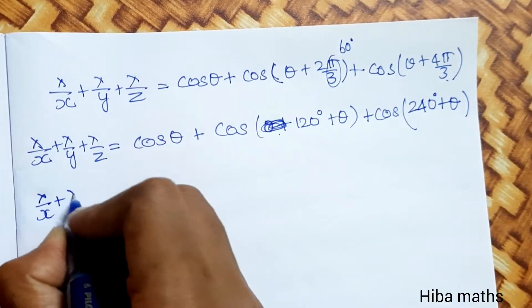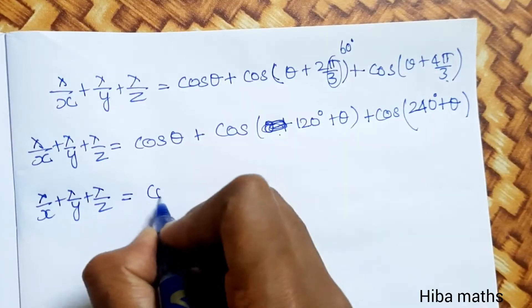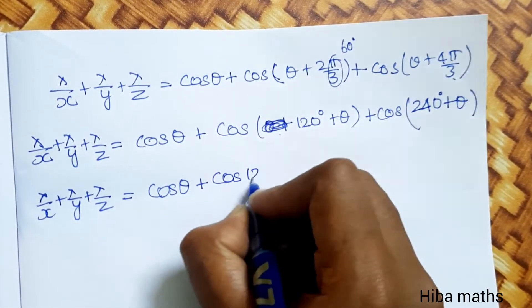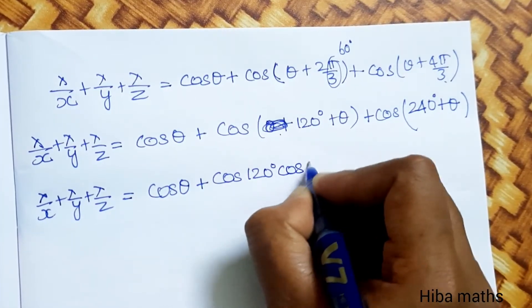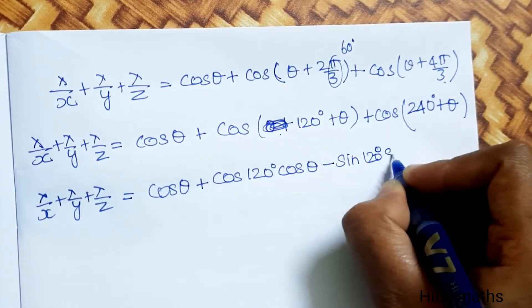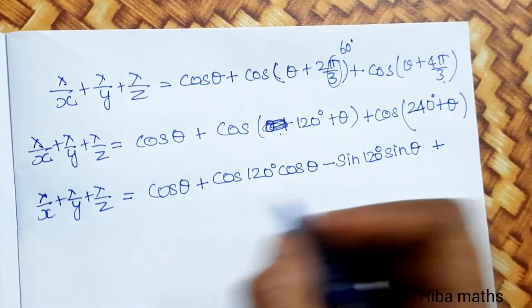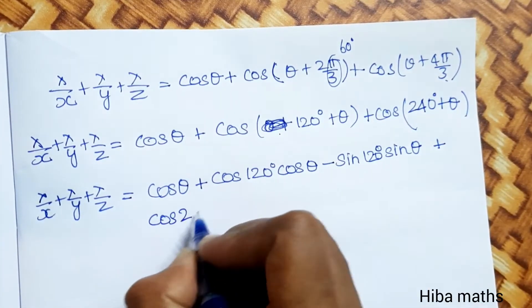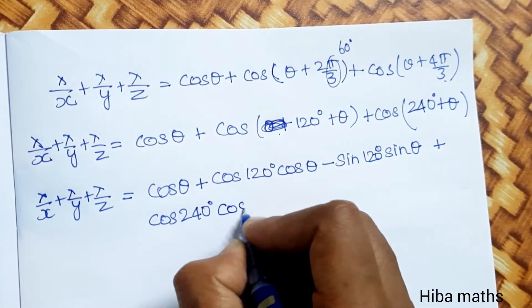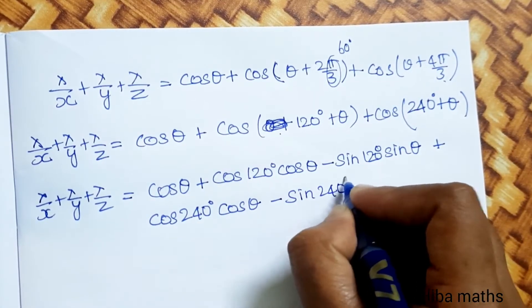Using the formula cos(A + B) = cos A cos B − sin A sin B: cos(θ + 120°) = cos θ cos 120° − sin θ sin 120°, and cos(θ + 240°) = cos θ cos 240° − sin θ sin 240°. Substituting the values of cos 240° and continuing the expansion.